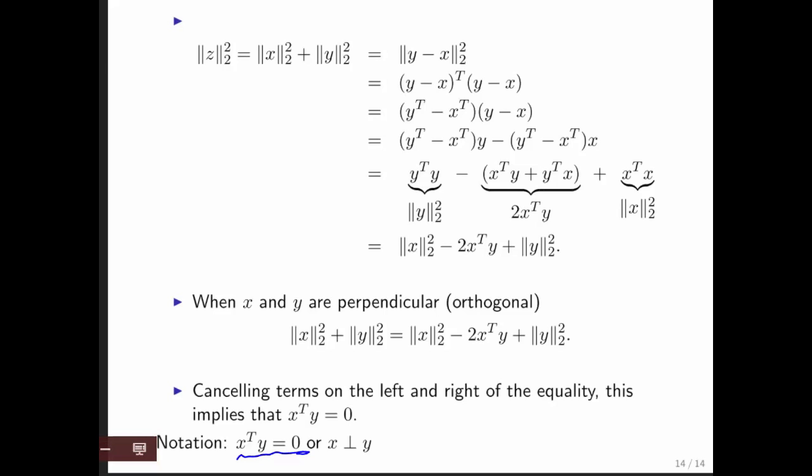Now we're going to use the notation that the dot product of the two vectors equals 0, and sometimes we'll use this perpendicular symbol right here.